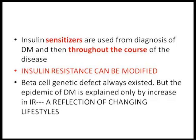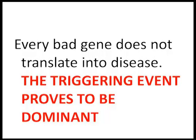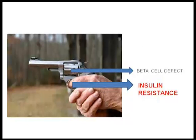Insulin resistance can be modified. The beta cell genetic defect always existed, but the epidemic of diabetes is explained only by an increase in insulin resistance. Our forefathers had the same genes — so why is there more diabetes now? Because insulin resistance has increased due to lifestyle changes. Beta cell defect may be the final determinant, but insulin resistance is the dominant determinant. Every bad gene, even a gene for beta cell defect, does not translate into disease — it is the triggering event which is dominant. The beta cell defect means the gun may be loaded, but unless you pull the trigger — which is insulin resistance driven by environment and behavior — diabetes does not happen. And that is where I rest my case.